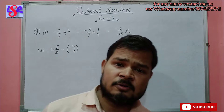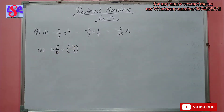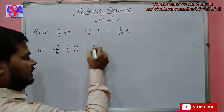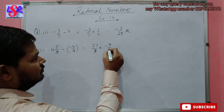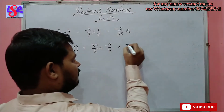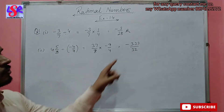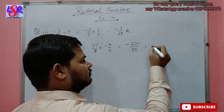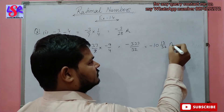Now let's move to the second part of this question. Here we have 4 whole 5 upon 8 divided by minus 4 upon 9. So we convert to improper fraction: 4 into 8 is 32, plus 5 is 37, giving 37 upon 8. This is then multiplied by minus 9 upon 4. We get minus 333 upon 32, and converting to mixed form, the answer is minus 10 whole 38 upon 32.